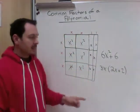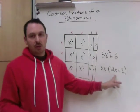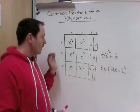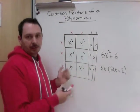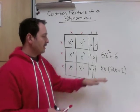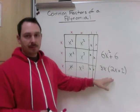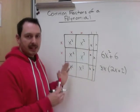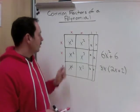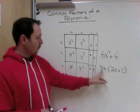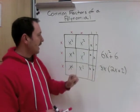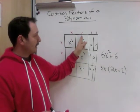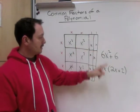You may notice it's not fully factored, but if the question simply asks what polynomial it represents and what factors it represents, we are done. There were 6x squareds and 6x's, and this rectangle represents 3x times (2x + 2).